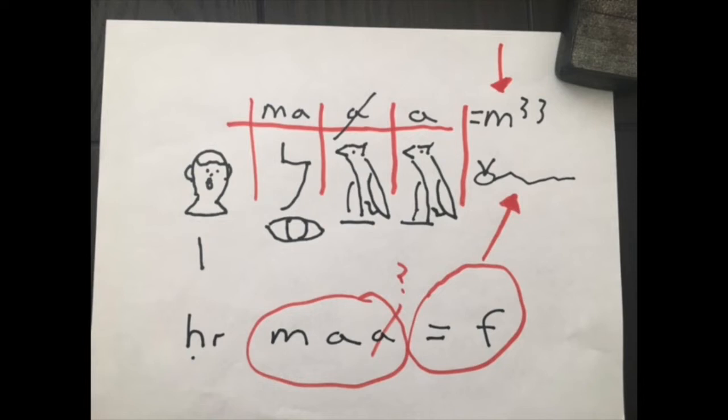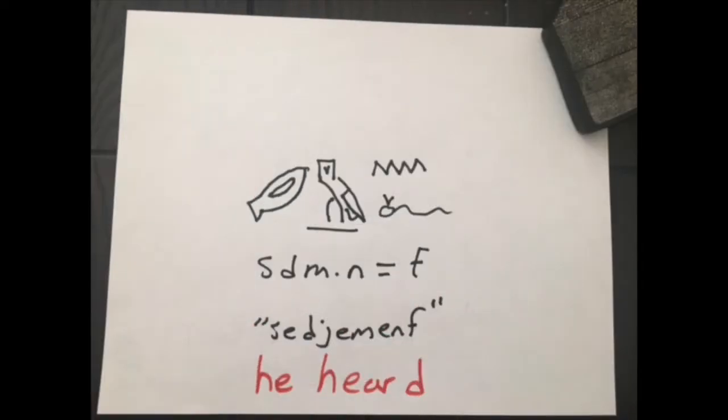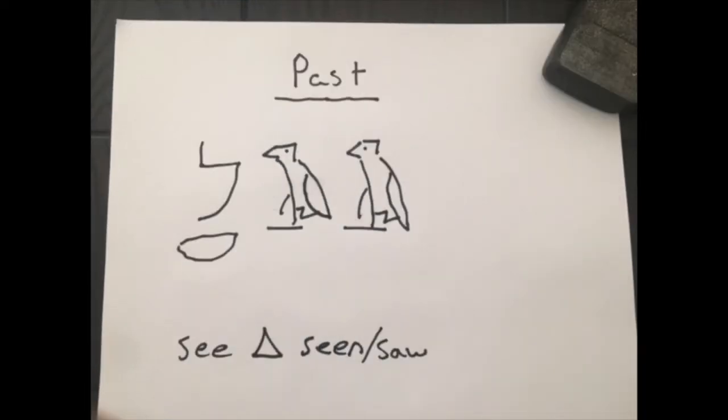So this is also written in a specific way. Like in the general present, we have an equal sign and then the suffix pronoun. So much like that, when we're writing the past tense, we're going to have the verb dot n equals the suffix pronoun. And I'm going to explain all of this, but that's the way to write it in transliteration.